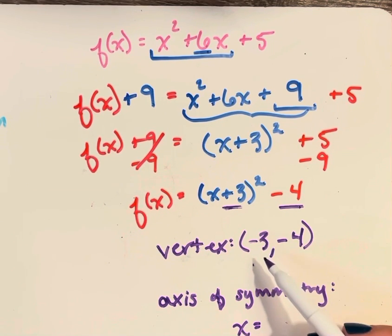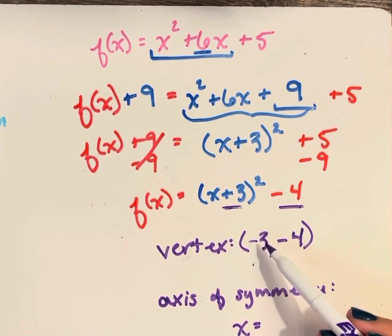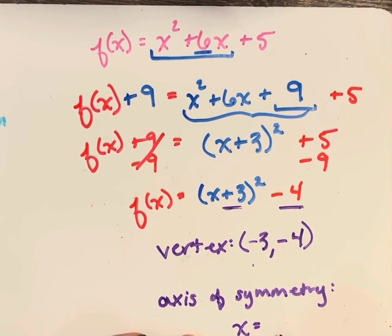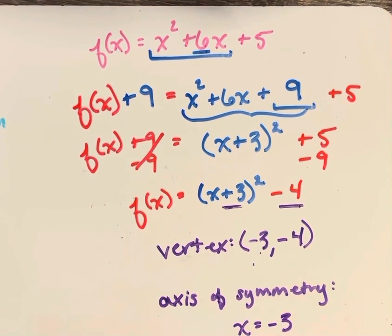The x value tells us what the equation is for the axis of symmetry. A vertical line is always in the form x equals a number. In this case, that x value that we're going through is negative 3, the axis of symmetry.